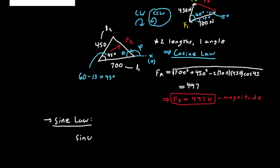So from the sine law, this is going to be sine alpha over the length across from alpha, which is 450. And that equals sine of 45 degrees over the length across from it, which in this case is FR.